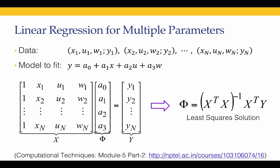We are not going to cover the derivation of the least squares solution here — that was covered in the Computational Techniques course, Module 5, Part 2, the link for which is given here. We had also shown that this least squares solution for two variables x and y gives the exact same solution as the one seen in the previous lecture. For two variables, y equal to a0 plus a1x, the first column of matrix X is all ones and the second column is the data x1, x2 up to xn.